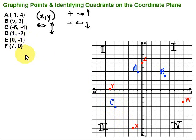Point D is 1, negative 2. Since 1 is positive, we go left or right first — 1 to the right. And then negative 2 is going to be down 2, which puts us right there. That's our point D.